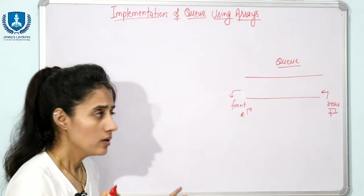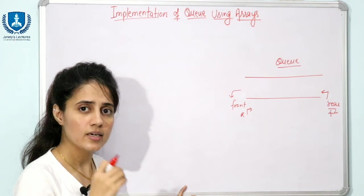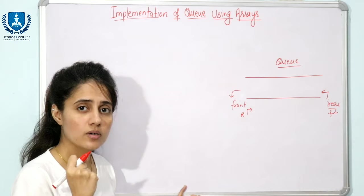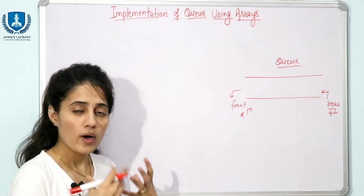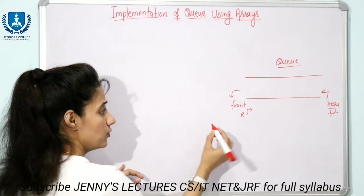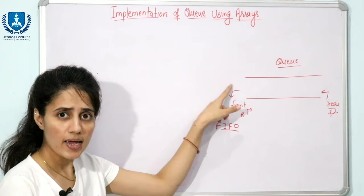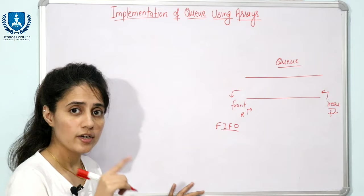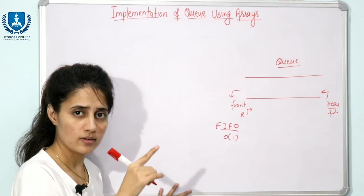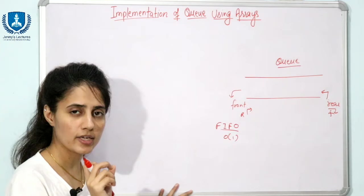Now, how are we going to implement this queue using arrays? Arrays means we will use static memory. First of all, we specify the size — the capacity of the queue. While implementing the queue, you must enforce the FIFO rule — first in, first out — which we discussed in the previous video. The time complexity for enqueue and dequeue operations must be O(1). Insertion is known as enqueue and deletion is known as dequeue in queue terminology.